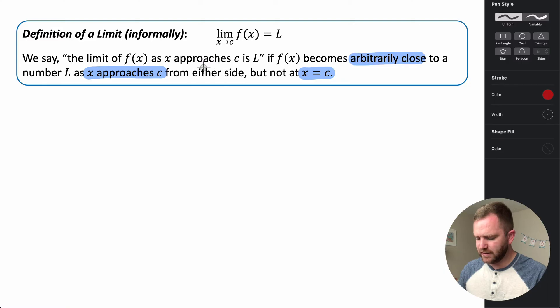Now when it says from either side, this actually means from both sides. Not just one or the other, but an inclusive either, so it has to come from both directions and approach the same number from both directions.